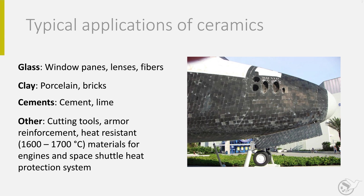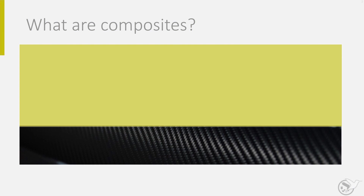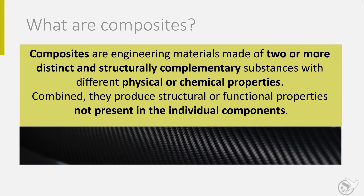Ceramics also have good temperature resistance, used in thermal protection systems of space vehicles like the Space Shuttle. Despite these good characteristics, ceramics are not often used in typical structural applications because they lack flexibility and ductility. The last category is composites. A definition is the following: composites are engineering materials in which two or more distinct, structurally complementary substances with different physical or chemical properties are combined to produce structural or functional properties not present in any individual component. Keywords in this definition are 'two or more distinct,' 'complementary,' and 'not present in any individual component.' Bringing together two different components creates a new combination having additional properties.